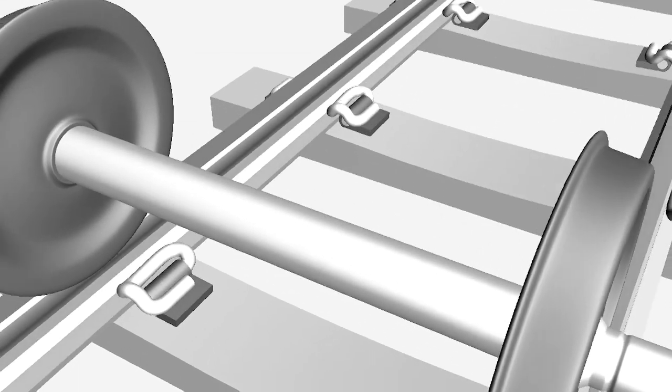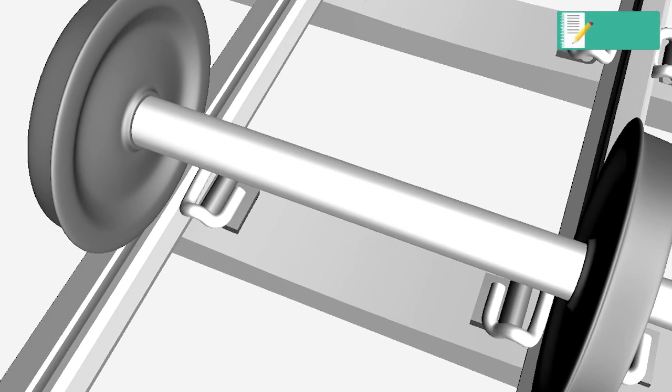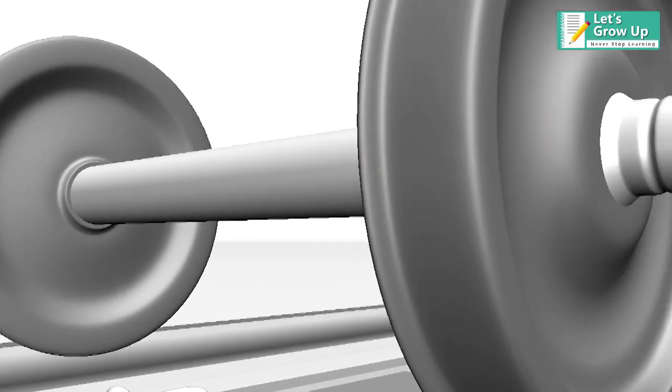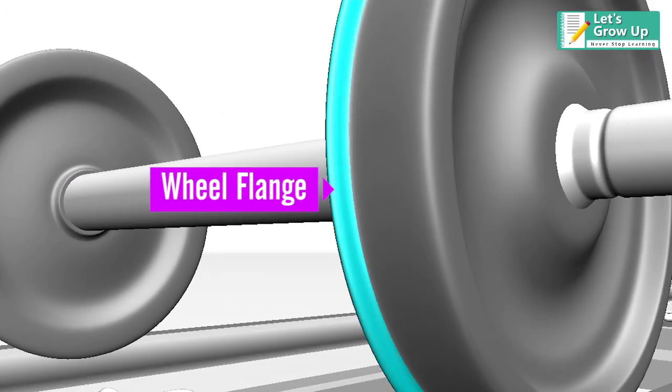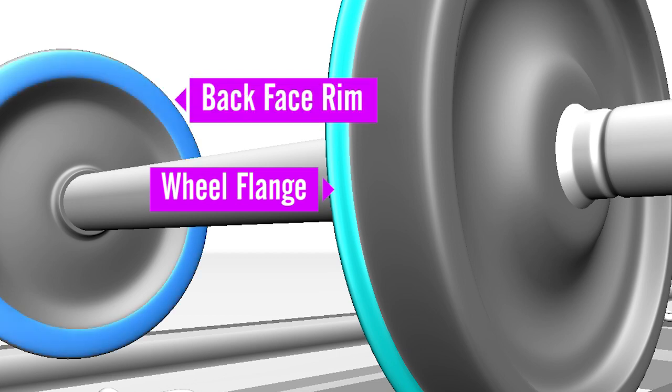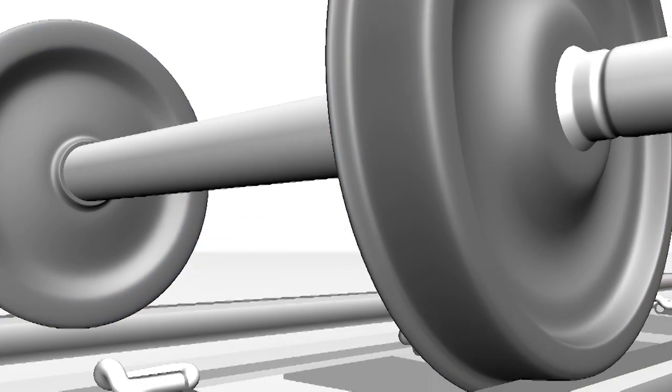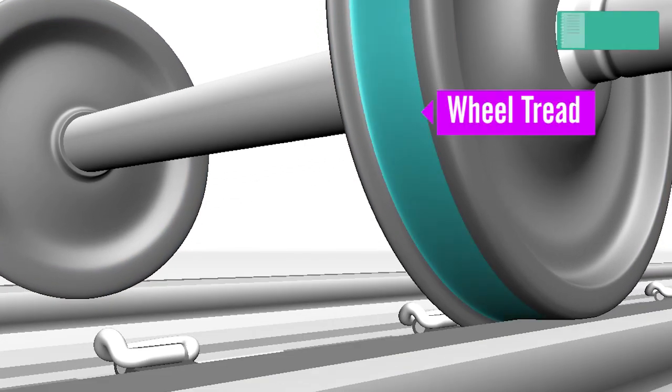Let's see the different parts of a wheel: wheel hub, wheel flange, back face rim, wheel front face rim, and wheel tread.